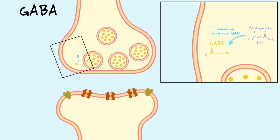Since GABA is made from glutamate, you will notice there will be a lot of overlaps between the synthesis and reuptake process of GABA in comparison to glutamate. After synthesis, GABA is transported into the synaptic vesicles via the vesicular inhibitory amino acid transporter, or VGAT.